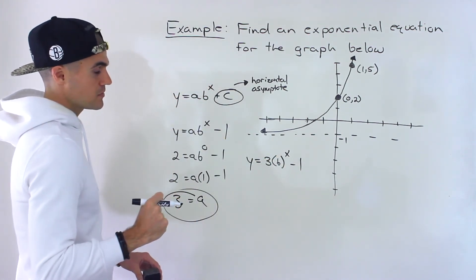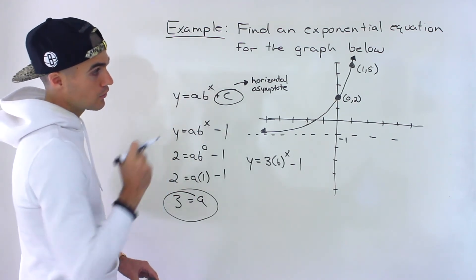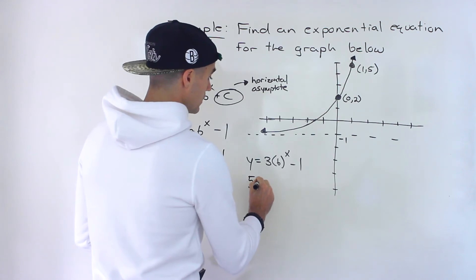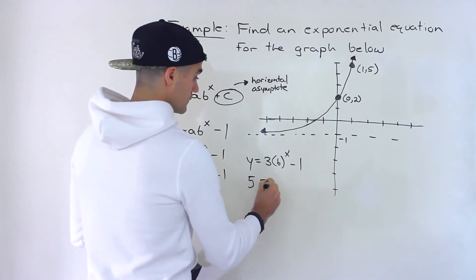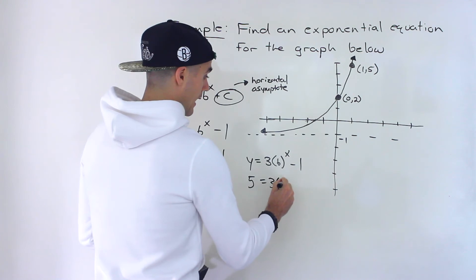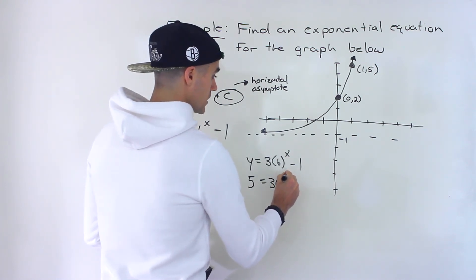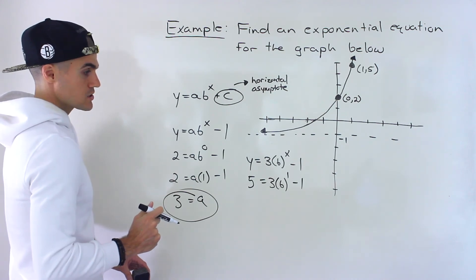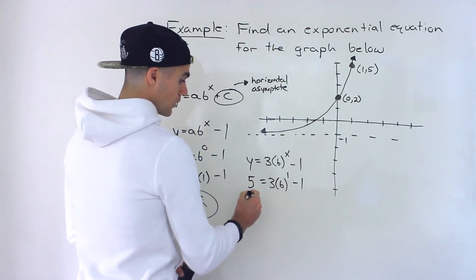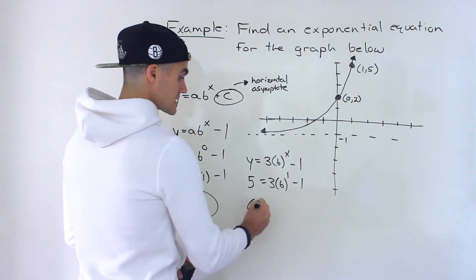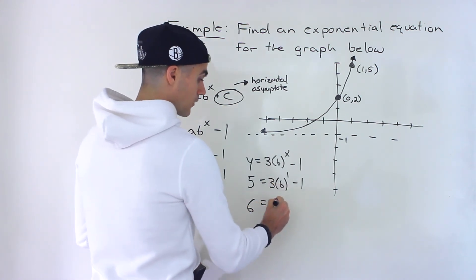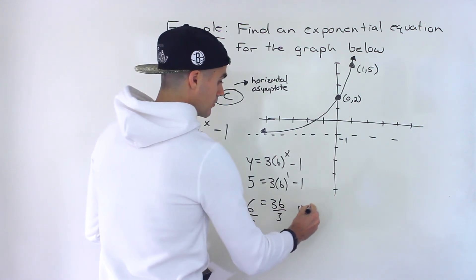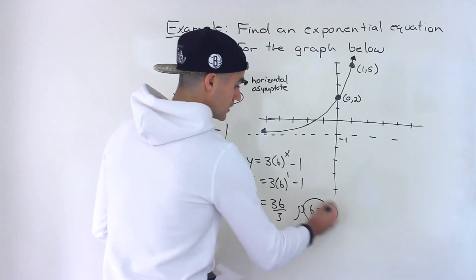And now we just have to solve for the b value, and we could do that with the other point (1, 5). So we would have the y value would be 5, and then the x value would be 1, and then we got the minus 1 there. So what would happen here? Bring the minus 1 over: 5 plus 1 would give us 6. 3 times b to the power 1 is just b. Divide both sides by 3, b would be 2.